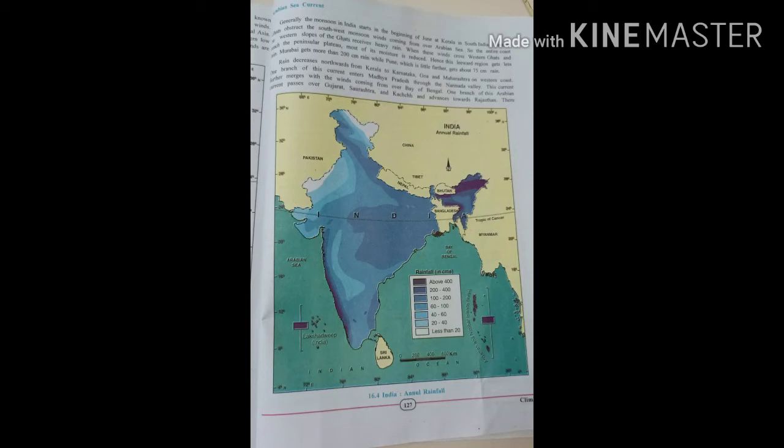Arabian Sea current: Generally the monsoon in India starts in the beginning of June at Kerala in south India. Western Ghats obstruct, meaning act as obstacle, the winds coming from the Arabian Sea. So entire coast on the western slope of the Ghats receives heavy rainfall. When these winds cross Western Ghats and reach the peninsular plateau, most of the moisture is reduced.